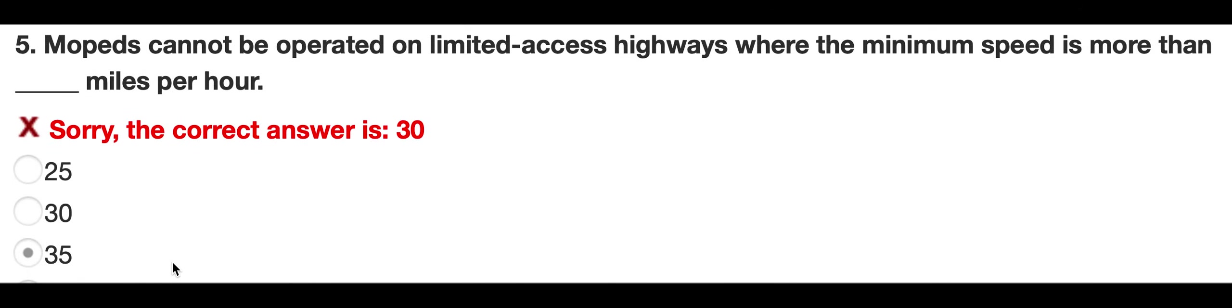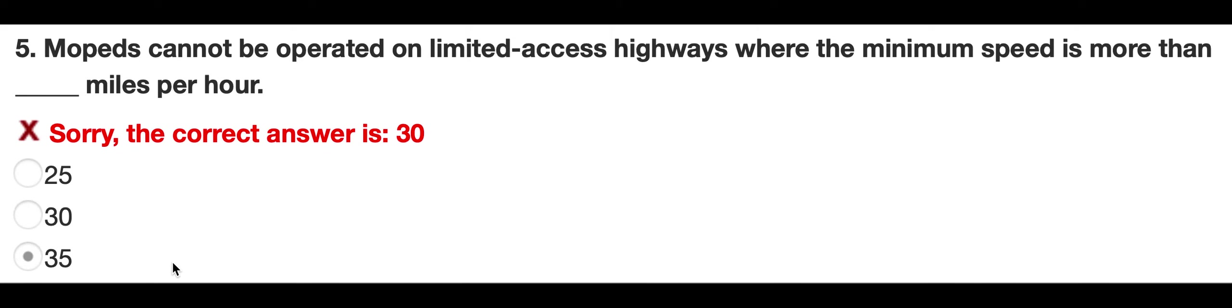Number five, mopeds cannot be operated on limited access highways where the minimum speed is more than blank miles per hour. I selected 35 miles per hour, but the correct answer is actually 30 miles per hour.